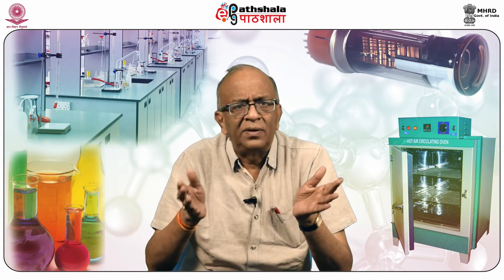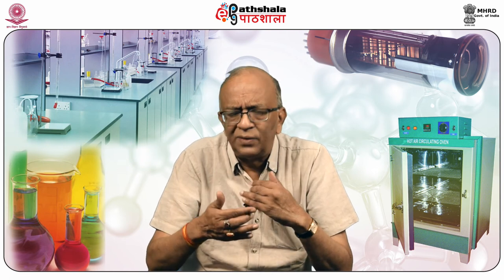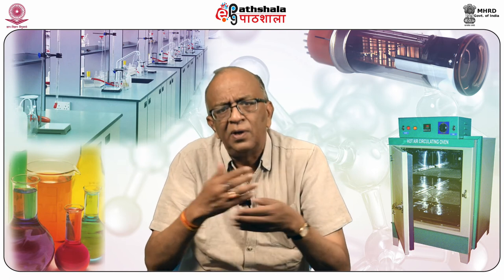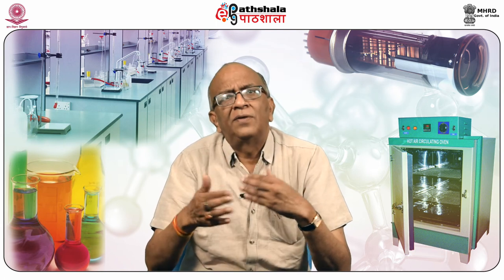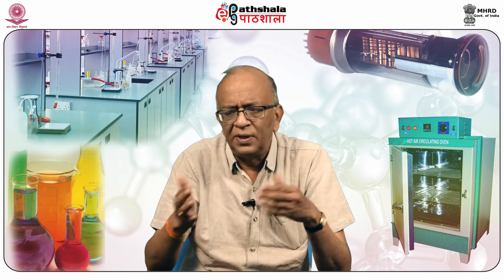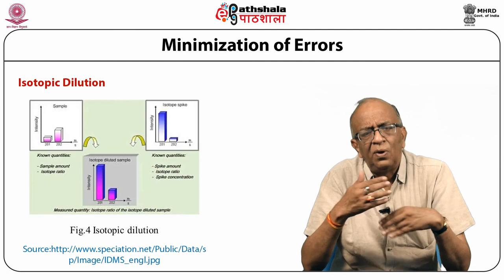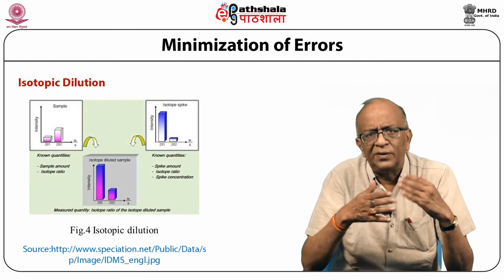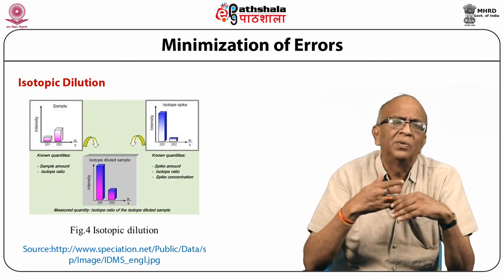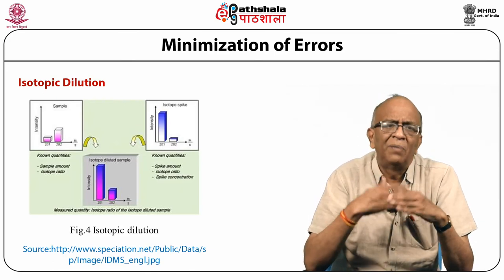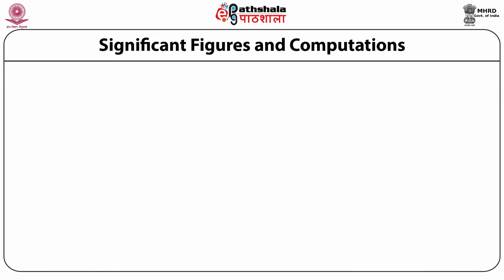For instrumental methods — electrolytical, spectroanalytical, thermoanalytical — the signal is amplified using electronic circuitry, which also minimizes errors. For radioanalytical methods, isotopic dilution using different types of isotopes is employed to minimize systematic errors.